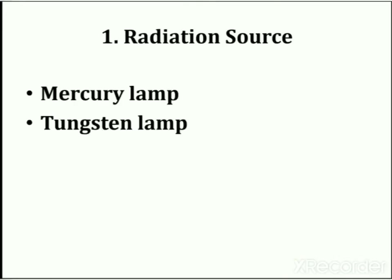The first part of the instrument is the radiation source, which is used to produce radiation. Mercury lamps and tungsten lamps are used as light sources in both nephelometry and turbidometry. Under light pressure, the excitation of mercury atoms is done by electric discharge. A tungsten lamp contains a piece of tungsten wire which is heated in a controlled atmosphere. For detailed specifications and working, refer to the previous lecture on instrumentation of ultraviolet-visible spectroscopy.